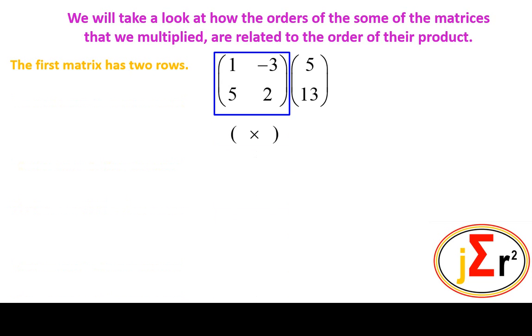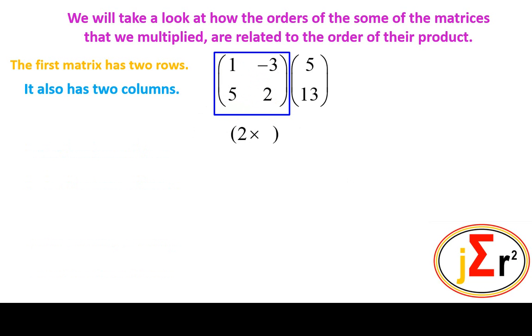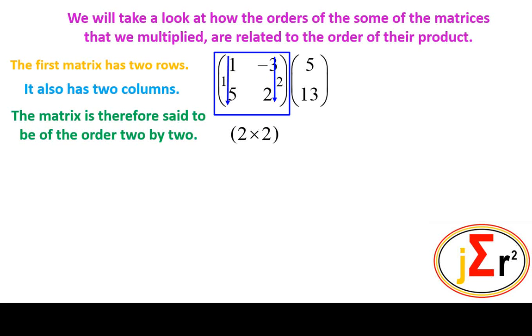The first matrix has two rows — the ones that go across. That same matrix also has two columns. The vertical ones are the columns, just like the columns in your house, your Colosseum, any building or monument — the columns are vertical. We have two of those vertical columns. The matrix is therefore said to be of the order 2x2. It has two rows and two columns.